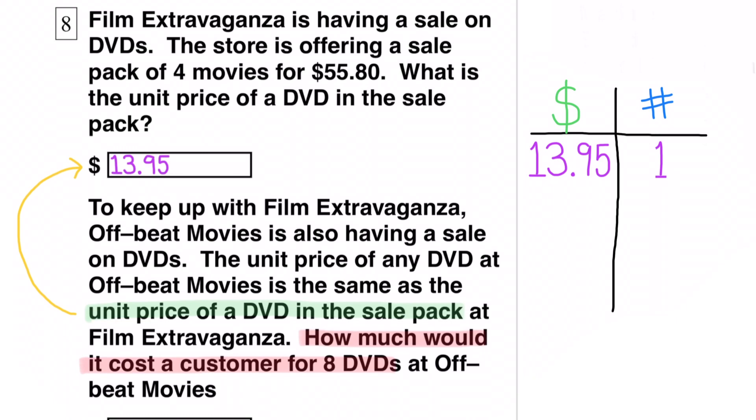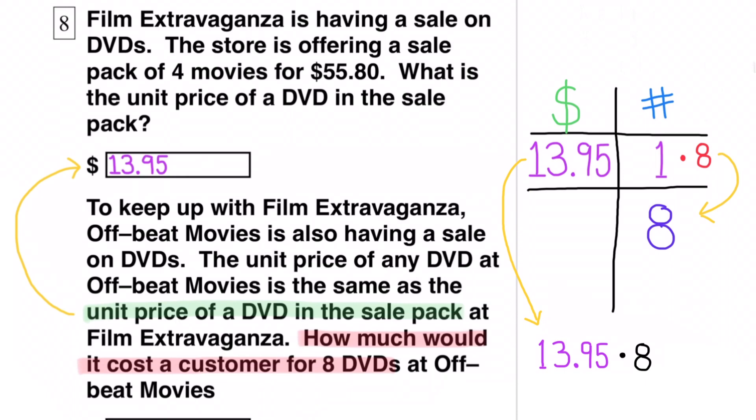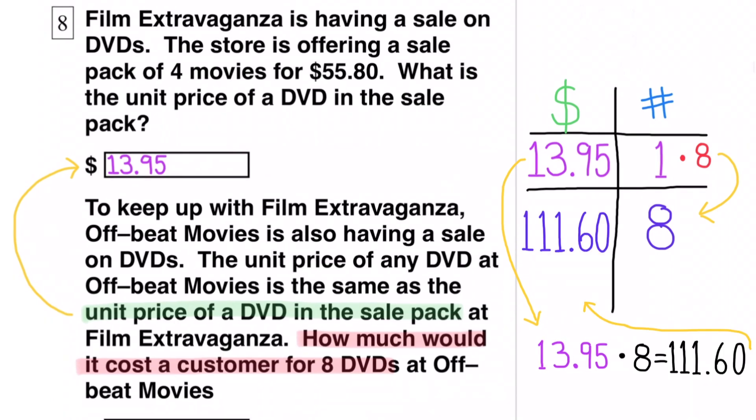Highlighted in red, it says how much would it cost a customer for 8 DVDs. So now in the table, I need to turn the 1 into an 8 by making it 8 times bigger. 1 DVD times 8 equals 8 DVDs, and $13.95 times 8 equals $111.60.